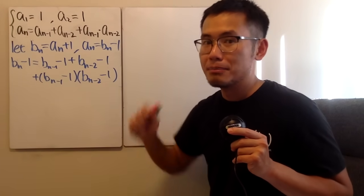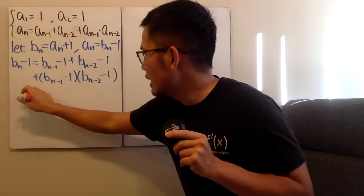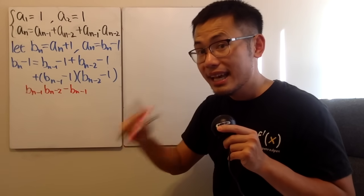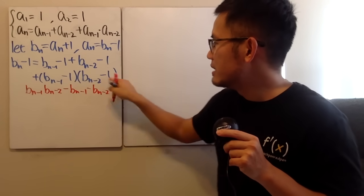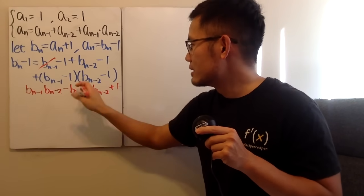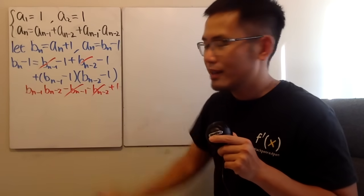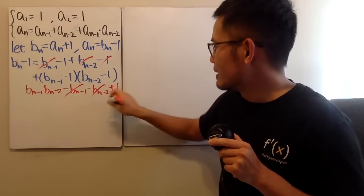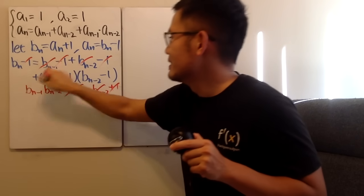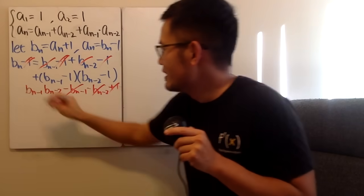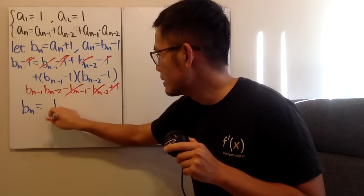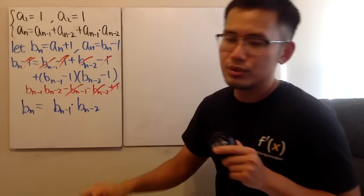We have a binomial times a binomial. We still have b_{n-1} times b_{n-2}, but then we get minus b_{n-1}, minus b_{n-2}, and plus one. Now the best part: b_{n-1} and b_{n-2} cancel out from both sides, and negative one plus one cancels out as well. So in the end, we just get b_n equals b_{n-1} times b_{n-2}.